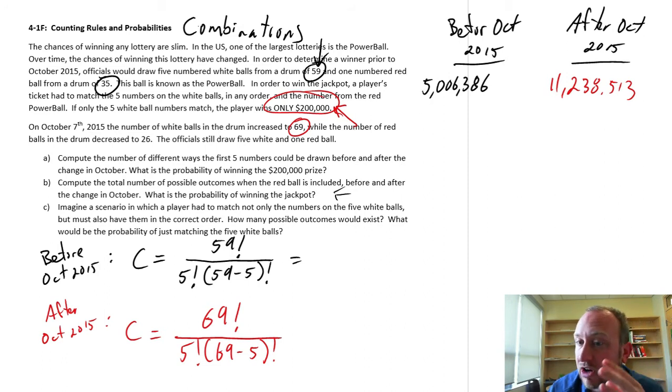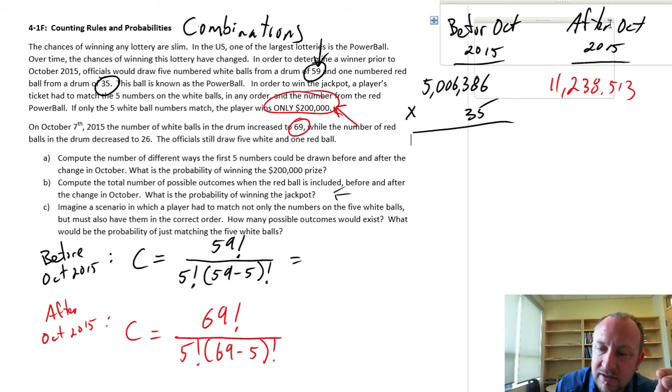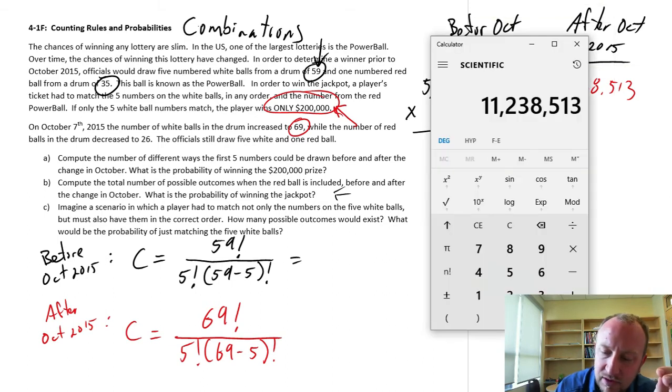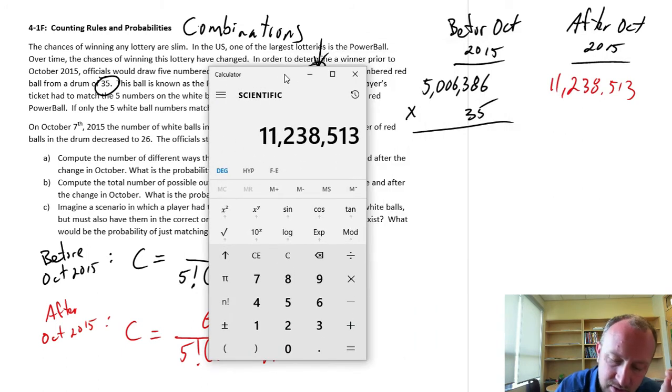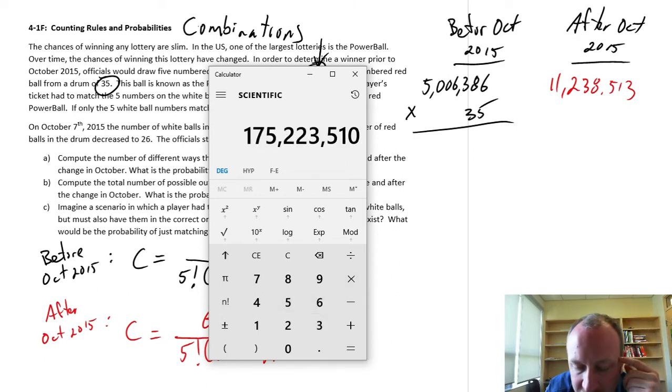So in order to calculate that, well, I have 5 million different combinations of white balls, times that by 35, because that can now match with any one of 35 red balls, and so now this gives us 5,006,386 times 35.